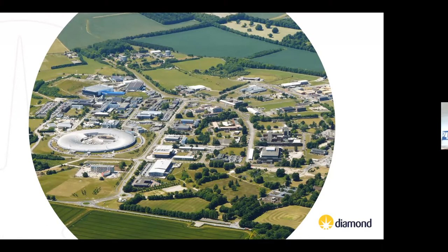The synchrotron works like a giant microscope by accelerating electrons to near light speed so that they give off intense light 10 billion times brighter than the sun. These intense beams of light are directed into laboratories known as beamlines where scientists use the light to study a vast range of subject matter. Here at Diamond we have seven macromolecular beamlines alongside dedicated facilities for cryo-electron microscopy, X-ray electron lasers, and the XChem fragment screening platform associated with beamline i04-1.